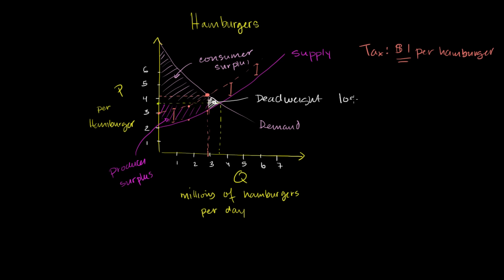How much revenue does the government get? Assuming 3 million burgers are sold, the government collects 3 million burgers times $1 per burger. The length of 3 million and the height of $1 give us the area of this orange rectangle — so the government gets $3 million per day.